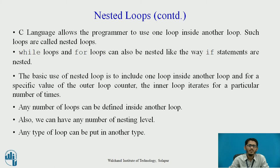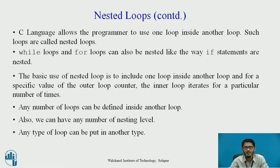The basic use of a nested loop is to include one loop inside another loop. For a specific value of the outer loop counter, the inner loop will iterate for a particular number of times. Any number of loops can be defined inside another loop, and we can have any number of nesting levels — it is not restricted to two levels. We can have one loop nested into a second loop, which is nested into a third loop, and so on, as per our need. Also, any type of loop can be put inside another type of loop.